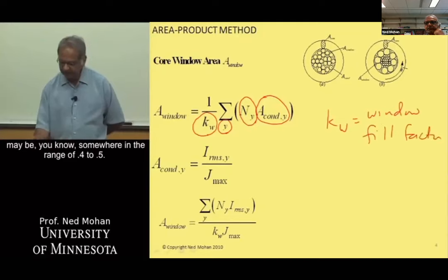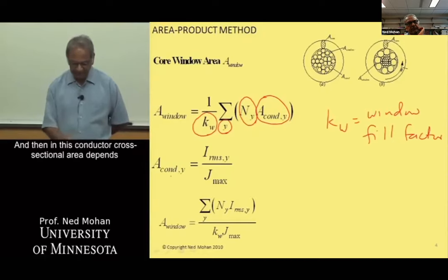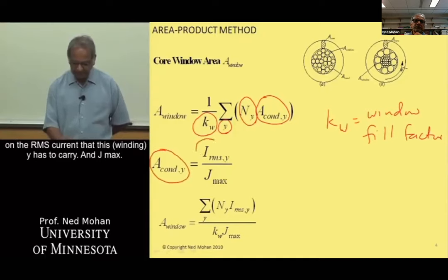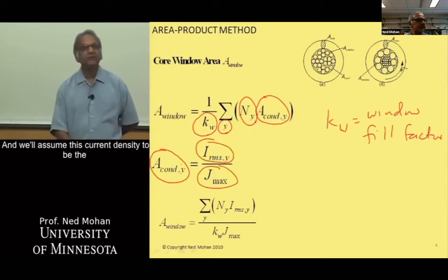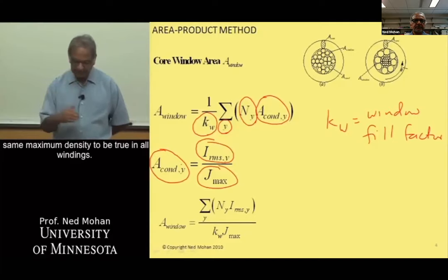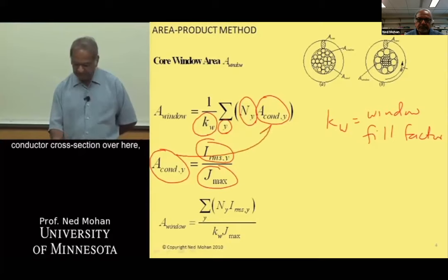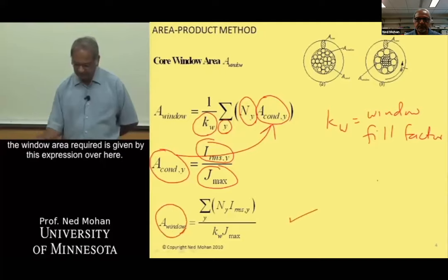The window fill factor k_W is somewhere in the range of 0.4 to 0.5, since we cannot fill the window completely. The conductor cross-sectional area depends on the RMS current that winding y must carry and J_max, assuming the same maximum current density applies to all windings. Substituting for the conductor cross-sectional area, the required window area is given by this expression.